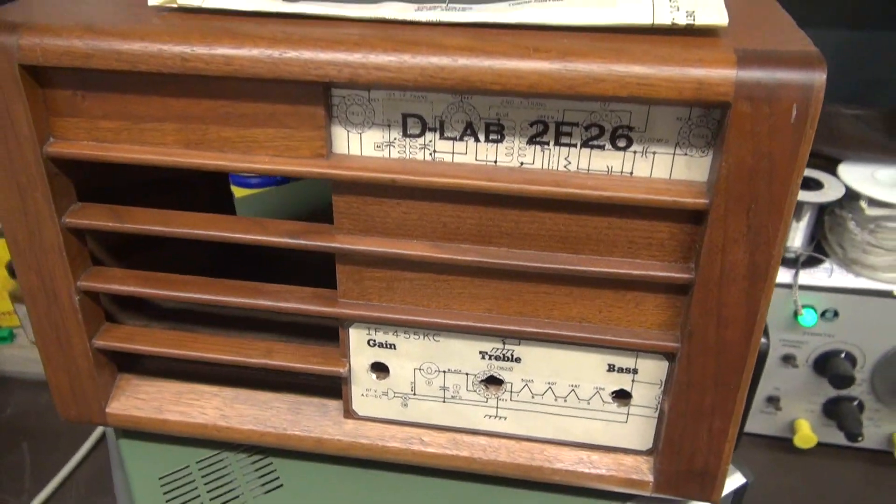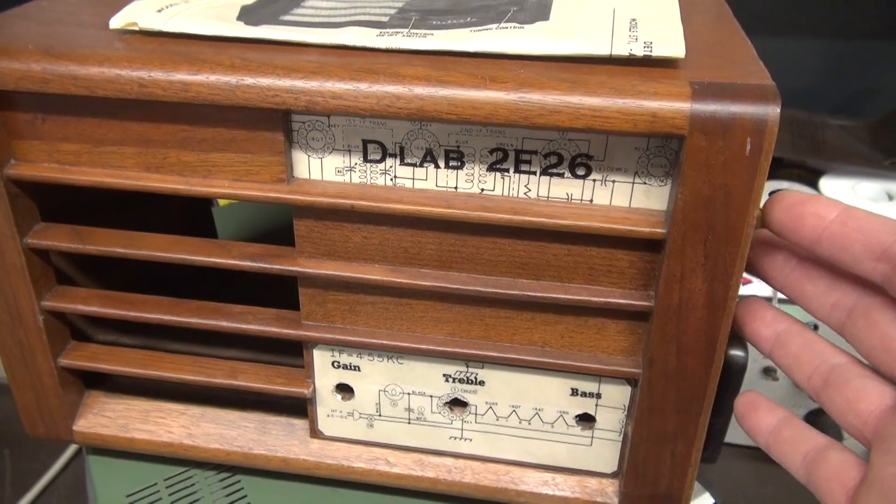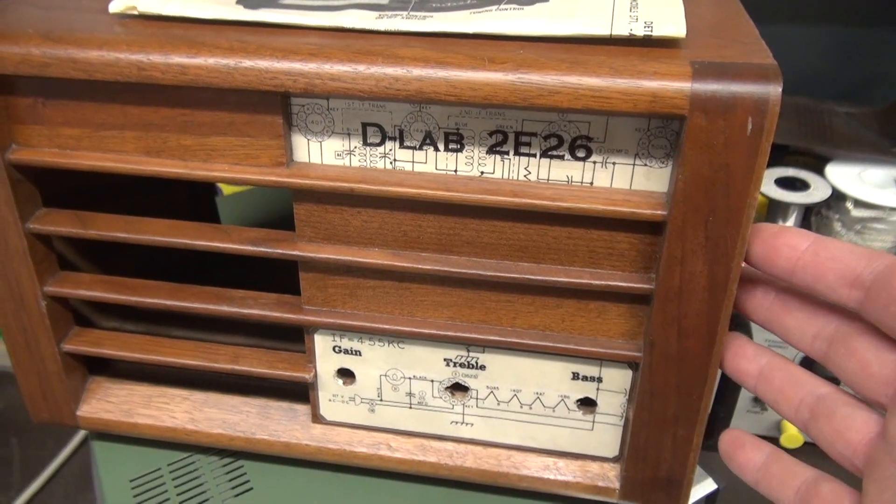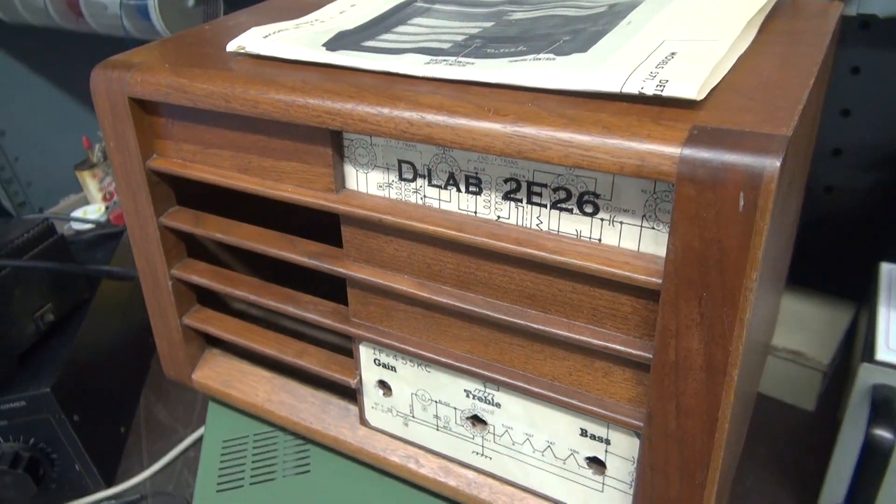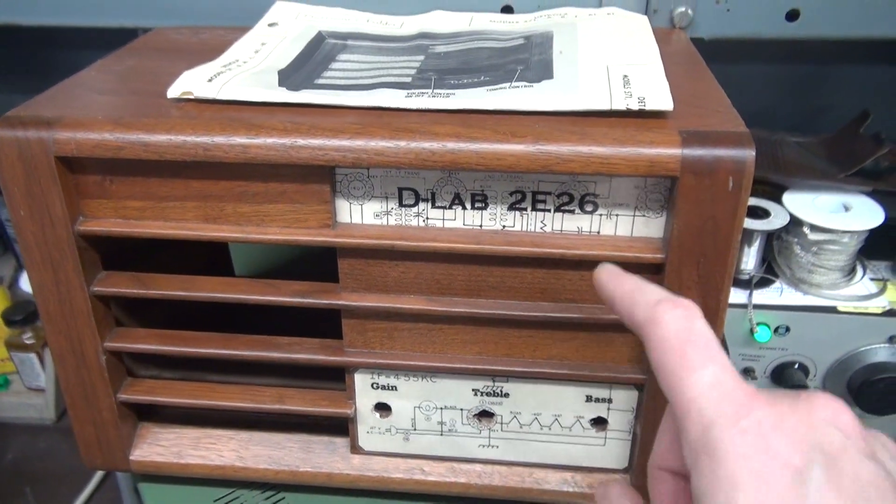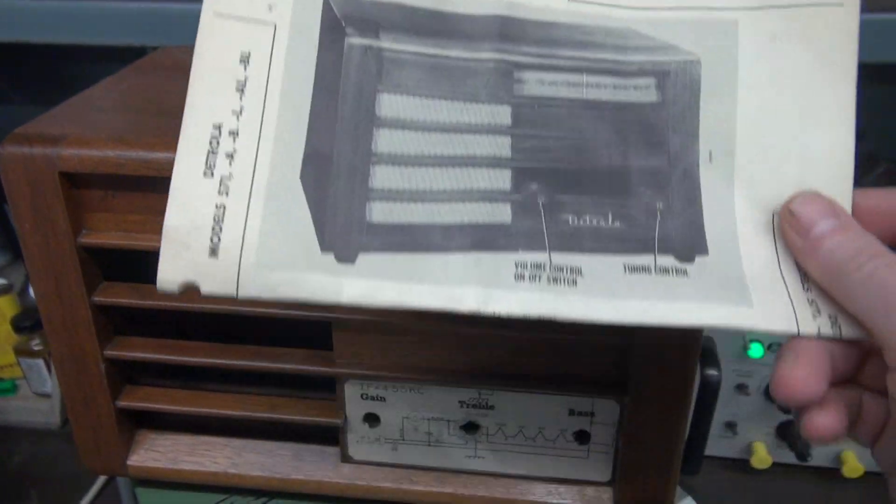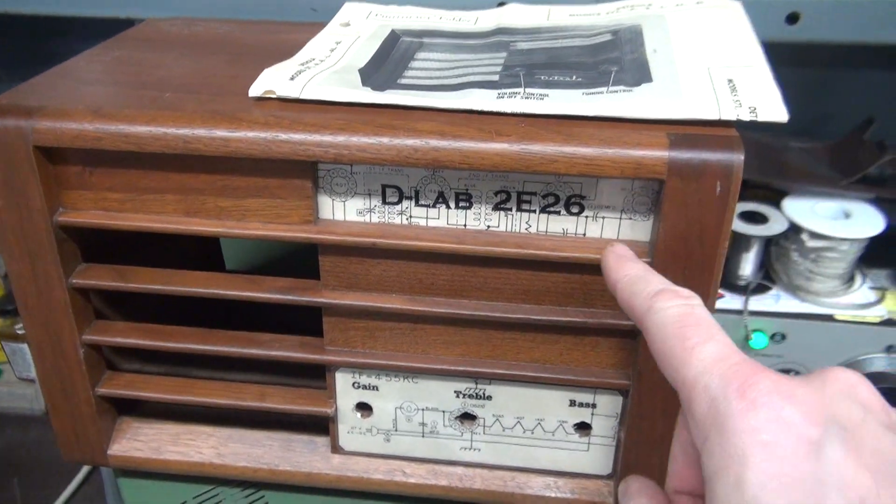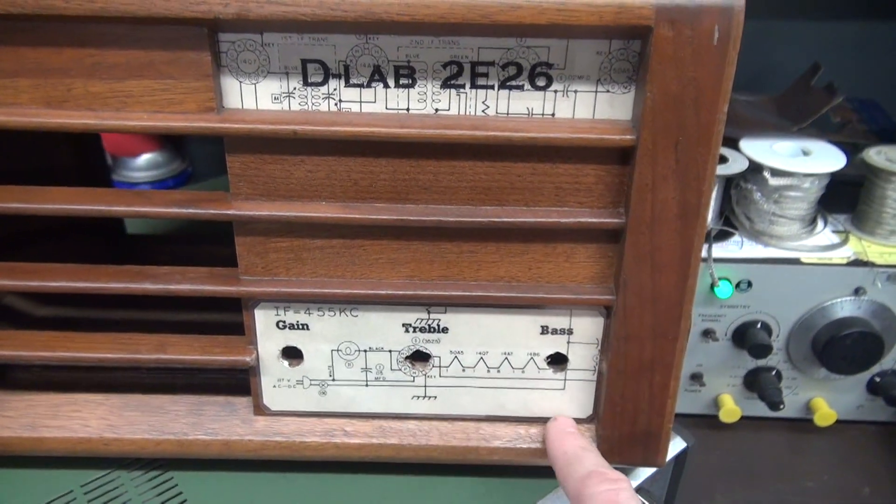The new one is going to be built in this cool Detrola cabinet. This was an old model 571 that I picked up. It had no chassis in it, but I thought what a cool amp to build the 2E26 in. I took this Sam's Photofact and cut out the schematic and made my dial art and also made the artwork around the controls.